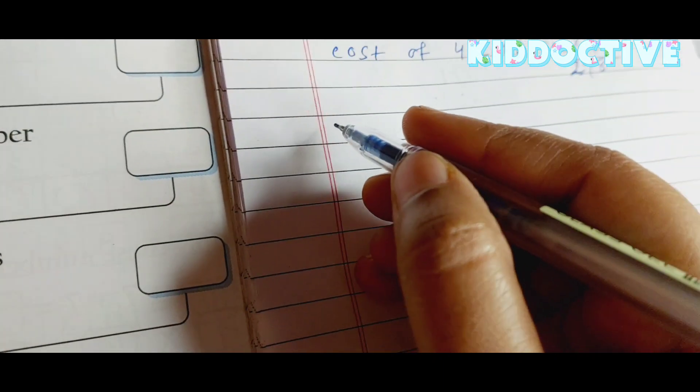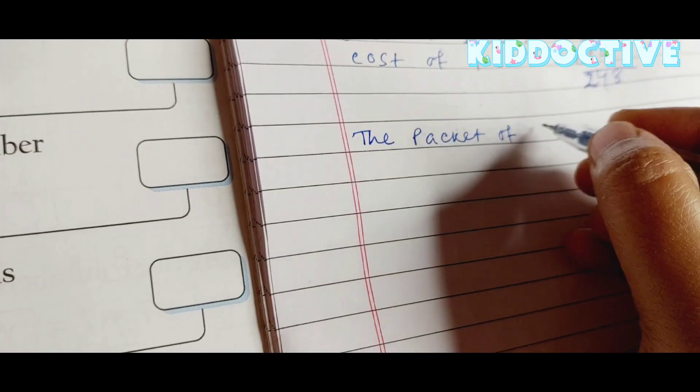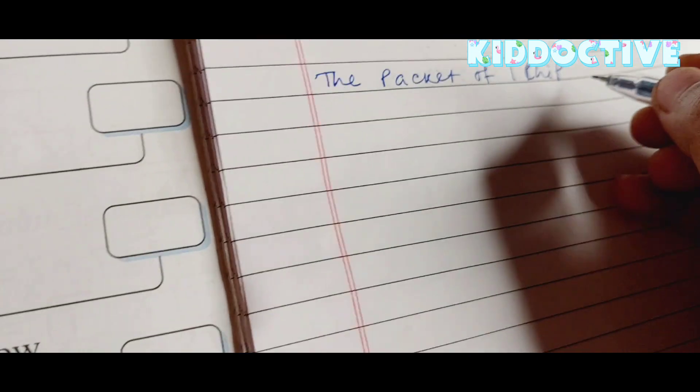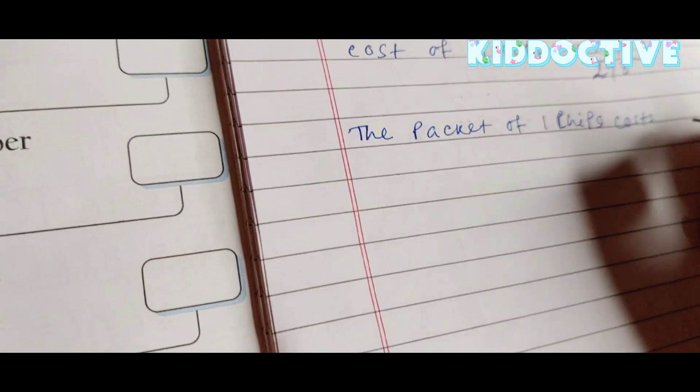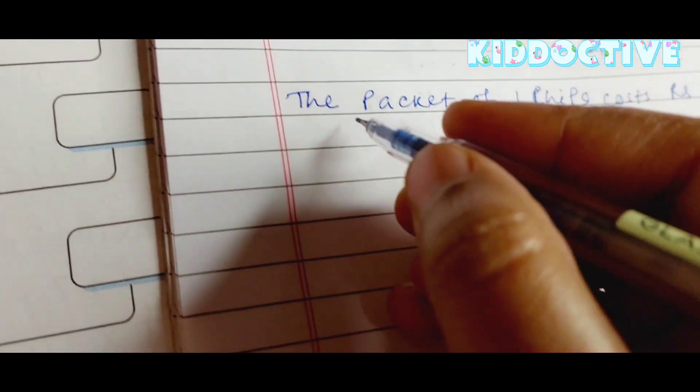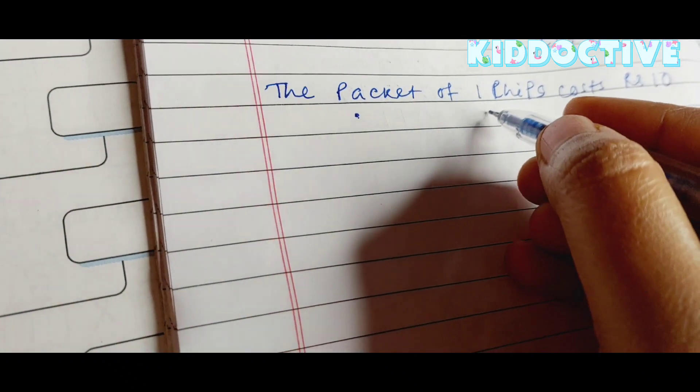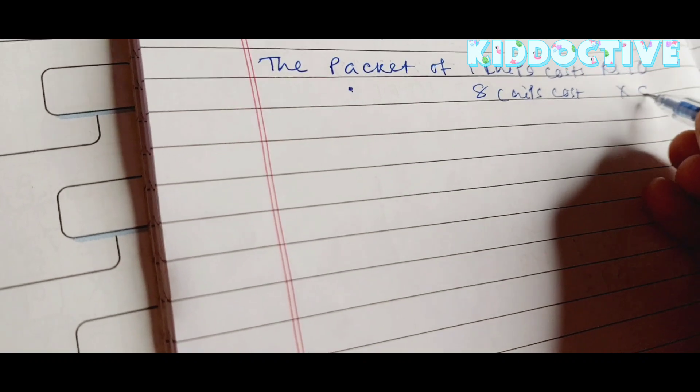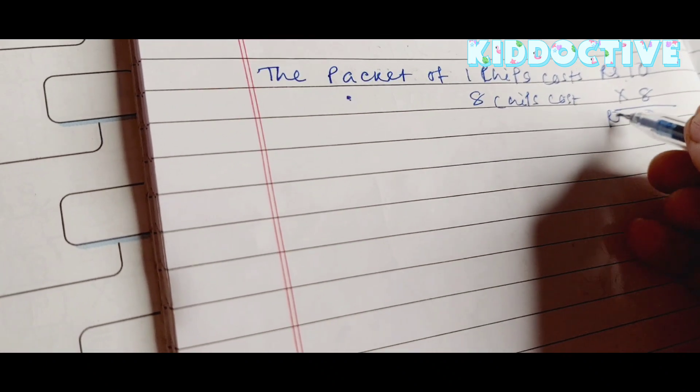The cost of one packet of chips is rupees 10. So the cost of eight packets of chips: 8 times 10 equals 80. The answer will be 80 rupees.